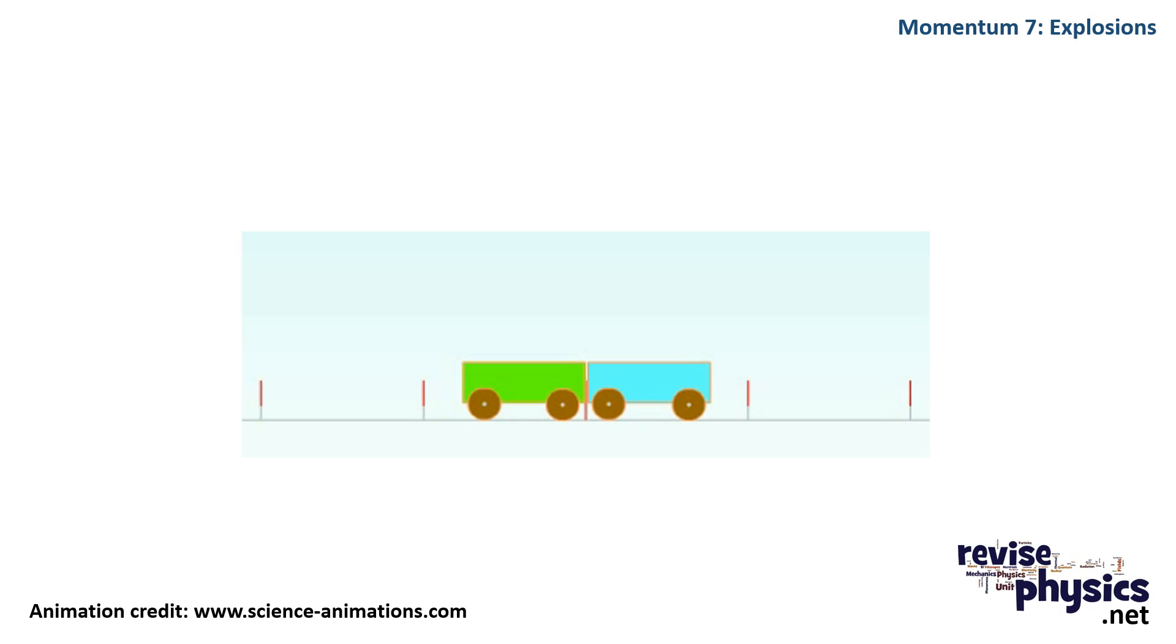We can see here where we have two trolleys of the same mass. Again, initial momentum is zero. Final momentum has also got to be zero.